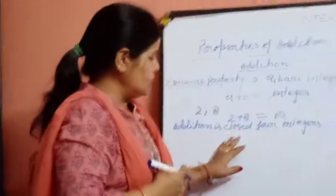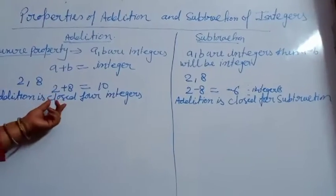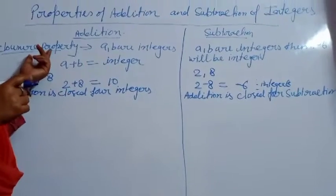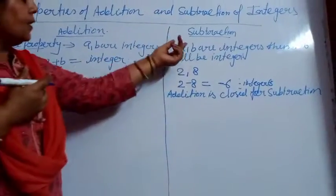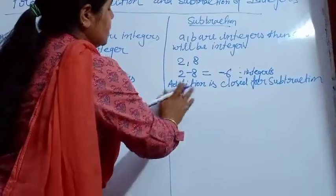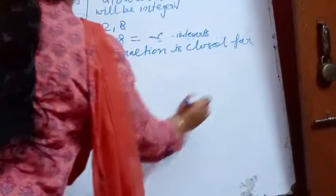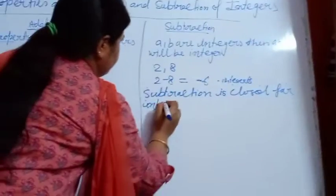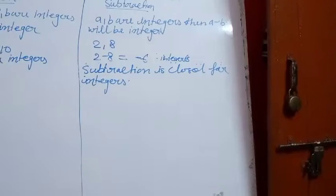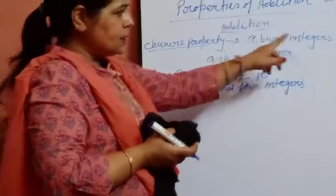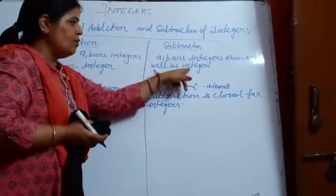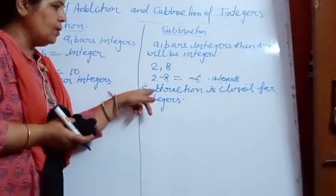Closed means they satisfy the closure property — it doesn't mean the door is closed! It means integers satisfy the closure property for both addition and subtraction. If A and B are any two integers, then A plus B will also belong to the integers, and A minus B will also belong to the integers. This is your first property.